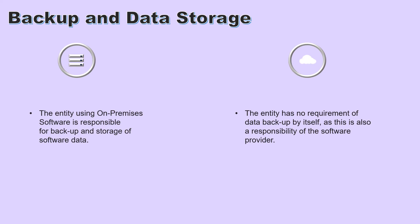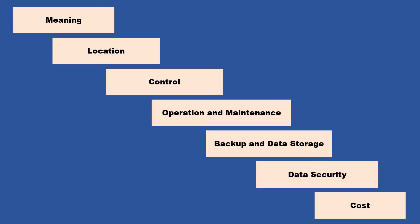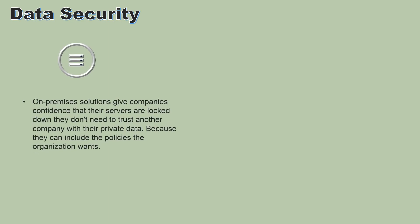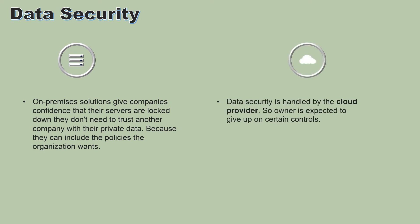On-premises solutions give companies confidence that their servers are locked down and they don't need to trust any other company with their private data, as they can include the security policies the organization wants. In the cloud, data security is handled by the cloud provider, so the owner gives up certain controls, and sometimes data may be shared with other companies — which could even be a competitor. Present-day cloud computing is very secure, but ultimately it is up to the user to decide what data to share and with whom.